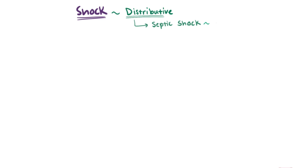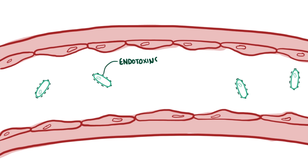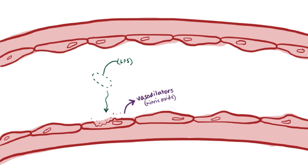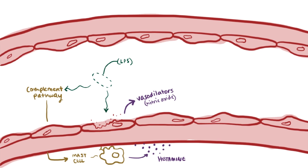The most common type of distributive shock is septic shock from pathogens in the blood. Endotoxins — large lipopolysaccharide molecules, sometimes called LPS — found in the outer membrane of gram-negative bacteria cause a cascade of events that leads to lowered perfusion. First, these molecules directly damage endothelial cells and cause them to release vasodilators like nitric oxide. They also activate the complement pathway, which stimulates mast cell release of histamine, another vasodilator.